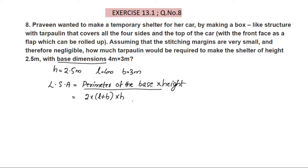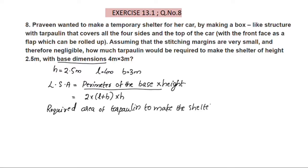The area of the top is also needed. The top is rectangle-shaped, so the area of the top is L × B. The required area to make the shelter equals the lateral surface area of the shelter plus the area of the top.